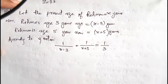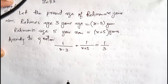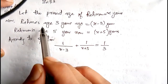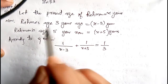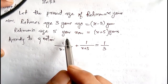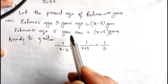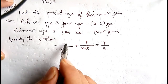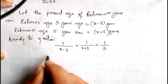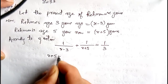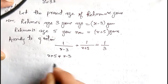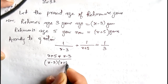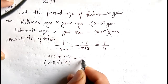You can easily calculate it by solving this equation. So here we do cross multiplication. This gives us: (x+5) + (x-3) divided by (x-3)(x+5) is equal to 1/3. Simplifying the numerator: x plus 5 plus x minus 3 gives 2x plus 2. The denominator expands as x squared plus 5x minus 3x minus 15.